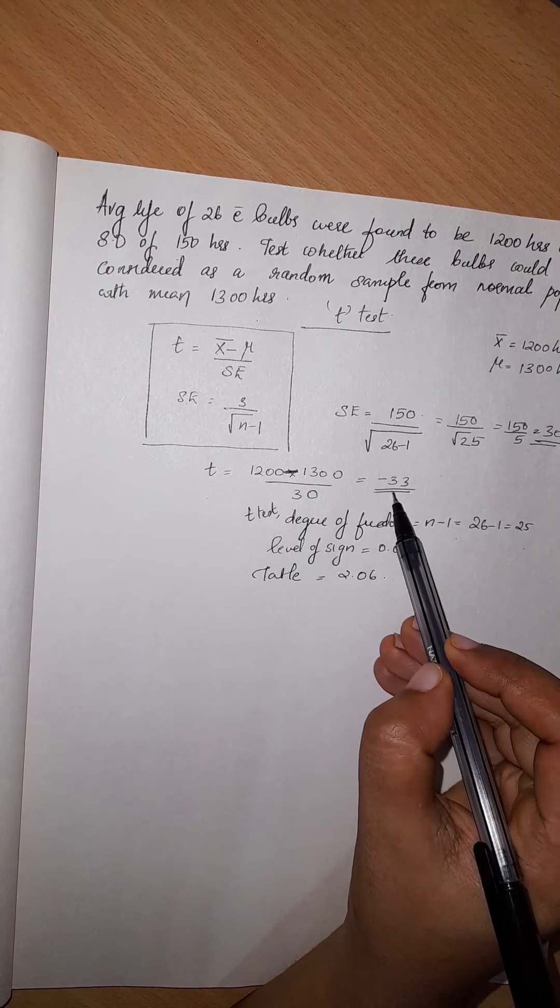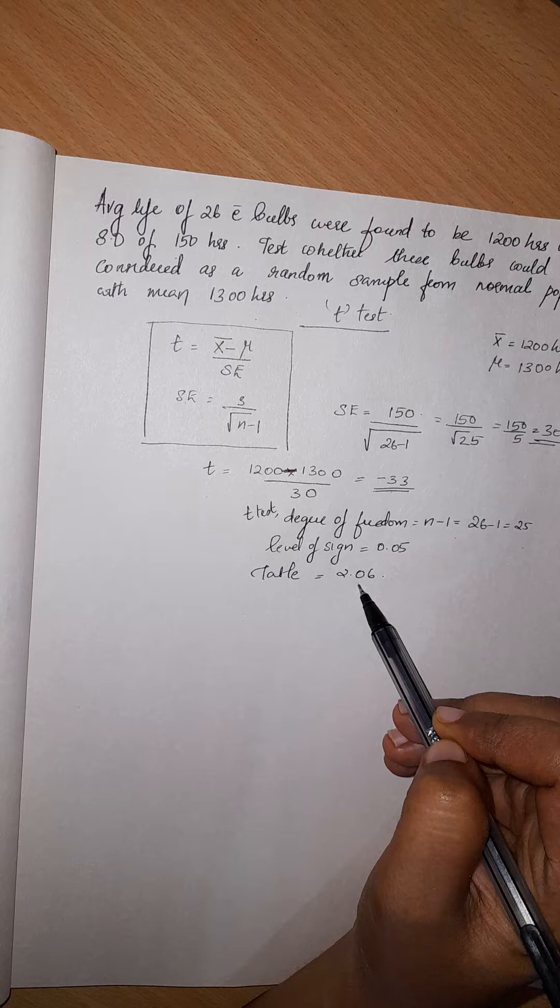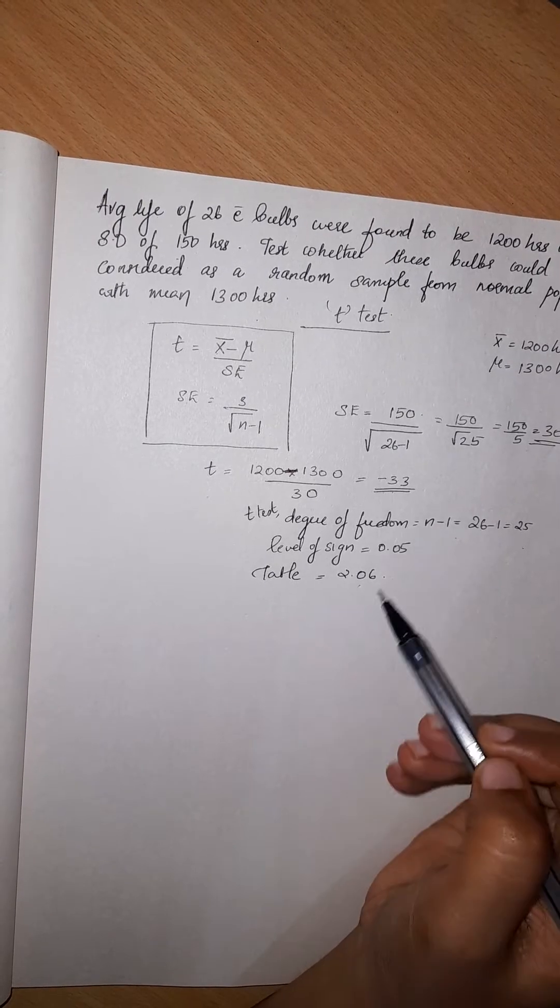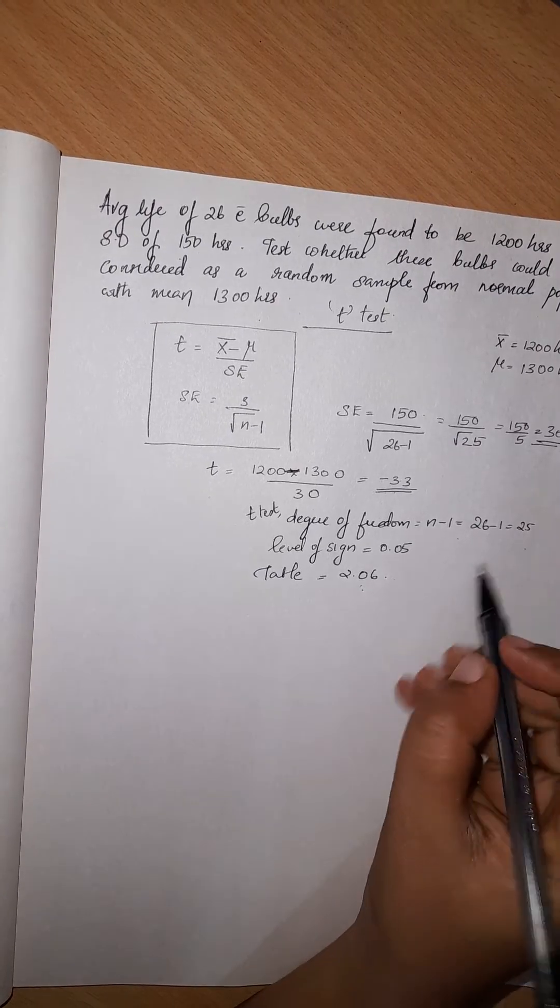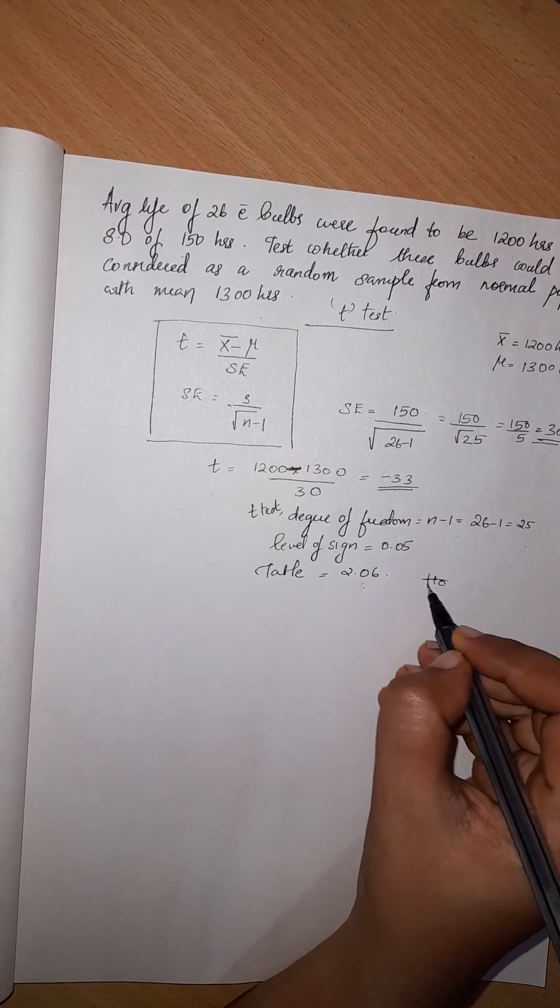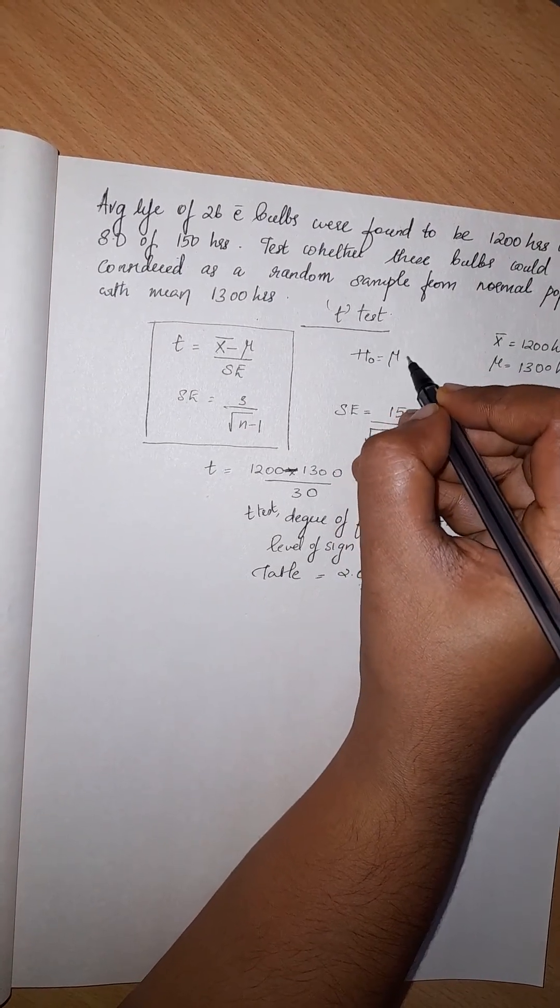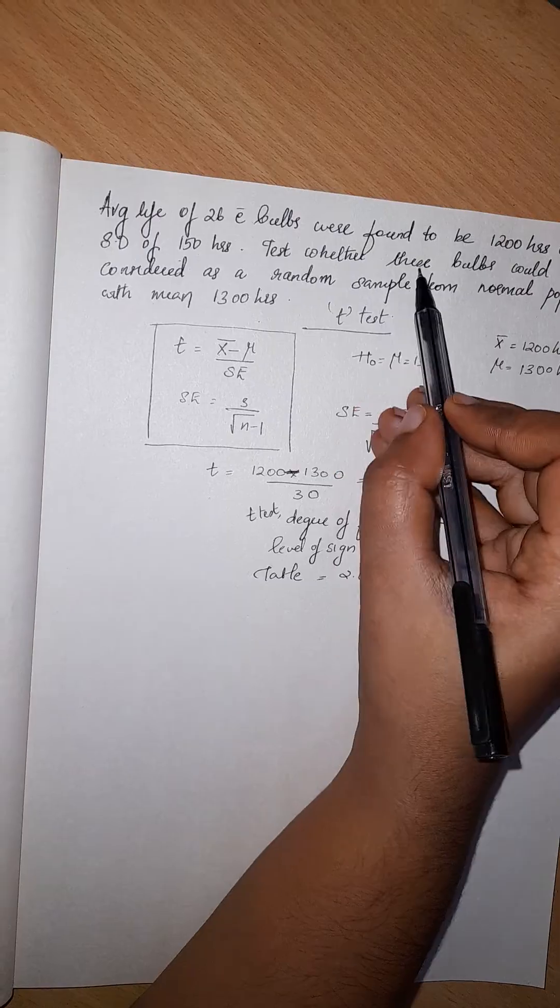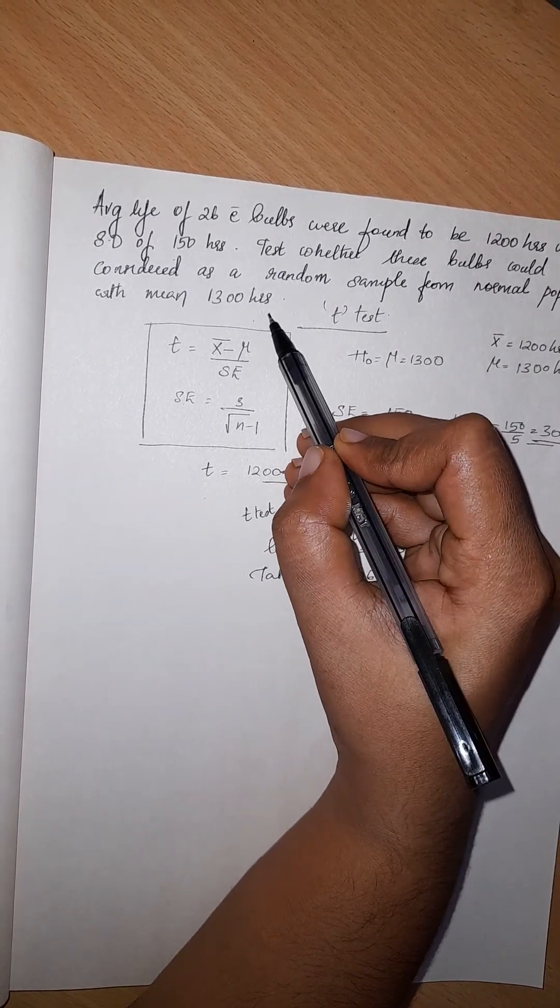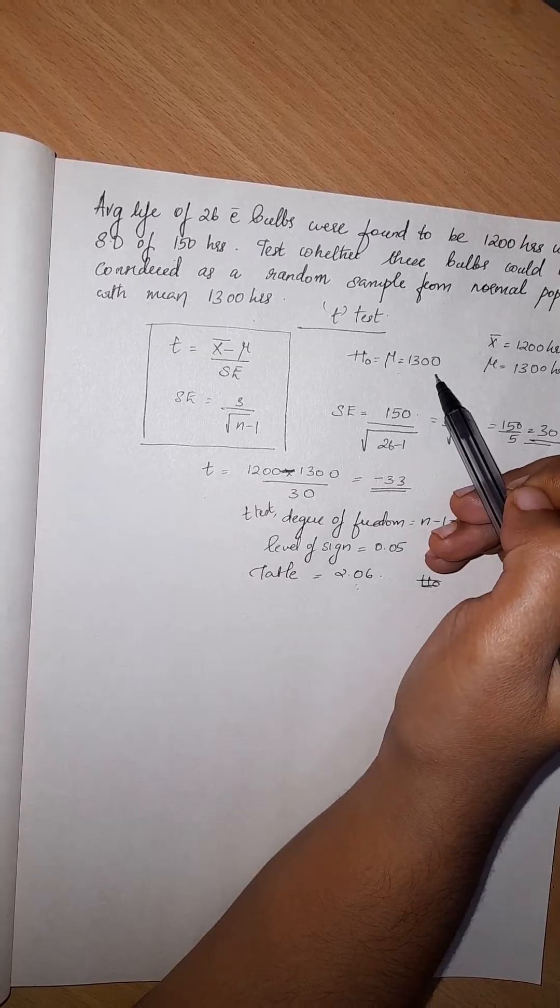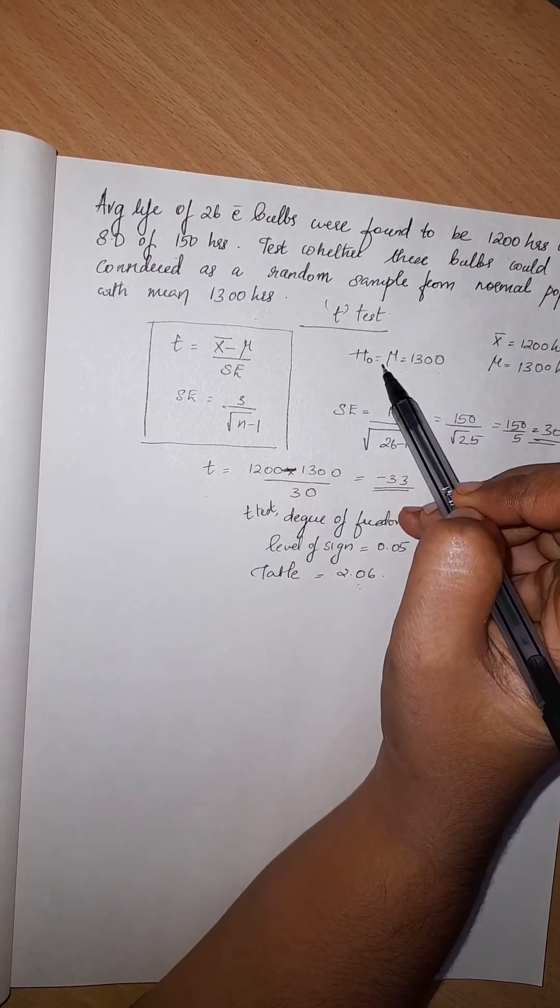We will reject the null hypothesis. H0 is mu equal to 1300. These bulbs were taken from a random sample of normal population with mu 1300.